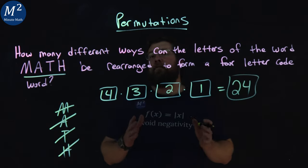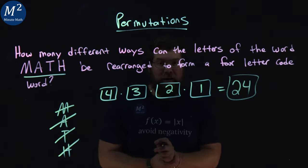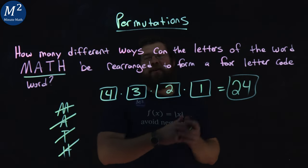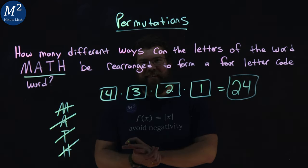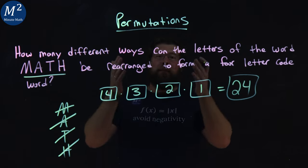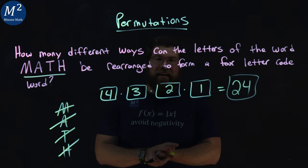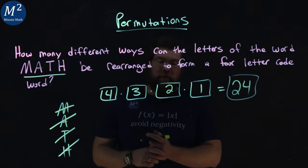There are 24 different ways that the word MATH can be arranged to create a four-letter code word. I hope you learned something here about permutations, the basics of it. As always, thanks for watching.